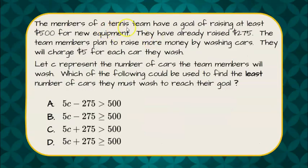The members of a tennis team have a goal of raising at least $500 for new equipment. They have already raised $275. The team members plan to raise more money by washing cars. They will charge $5 for each car they wash. Let C represent the number of cars that the team members will wash. Which of the following could be used to find the least number of cars they must wash to reach their goal?